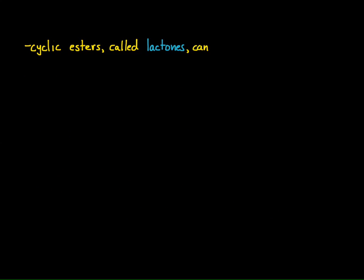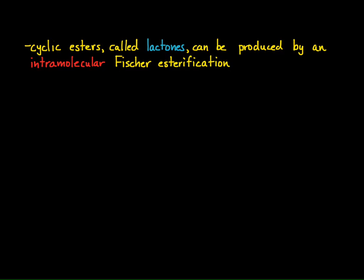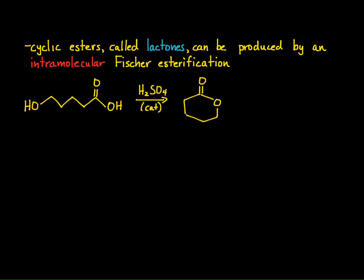One cool feature about esters is that we can produce cyclic esters, called lactones. They're typically produced by an intramolecular Fischer Esterification of an alcohol with a carboxylic acid. If you have a structure containing both a carboxylic acid and an alcohol, and you see a catalytic amount of acid such as sulfuric acid as the reagent, you should think about intramolecular Fischer Esterification. The product is a cyclic ester — a lactone.